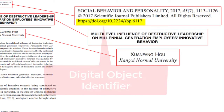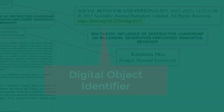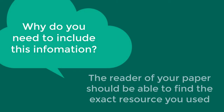DOI stands for Digital Object Identifier, and it's a unique identifier specific to each article. These details are needed in your reference list citations so the reader of your paper can locate the exact resource you used.